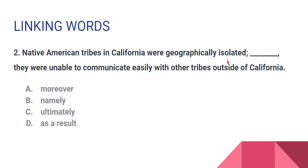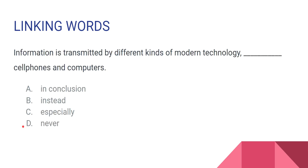Because it is a cause-and-effect relationship, 'as a result of this' is probably the correct answer — option D. Let's go to the next sentence. Information is transmitted by different kinds of modern technology — cell phones and computers.